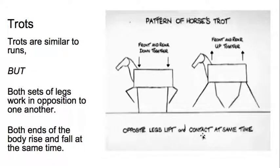The opposite legs lift and contact at the same time. This is taken from the Animator's Survival Kit. So a trot is much simpler in a sense than a walk because both sets of legs are doing the same thing.